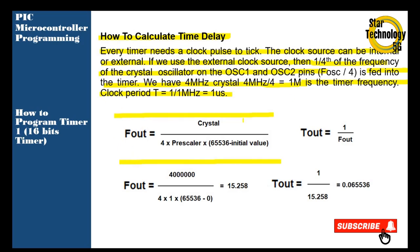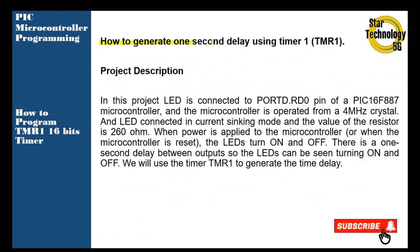You can calculate the timer from this formula: Fout equals crystal divided by 4, multiplied by prescaler, multiplied by 65535 minus initial value. Tout equals 1 over Fout, which gives us the maximum time delay generated by the 16-bit timer. We are using a 4MHz crystal. We will divide 4 by 4, multiply by 1 (prescaler value equals 1), and multiply by the timer's maximum value FFFF minus 0. This gives us 15.258 for Fout, and when we calculate Tout, we get 0.065535 seconds. This is the maximum time delay generated by Timer 1.